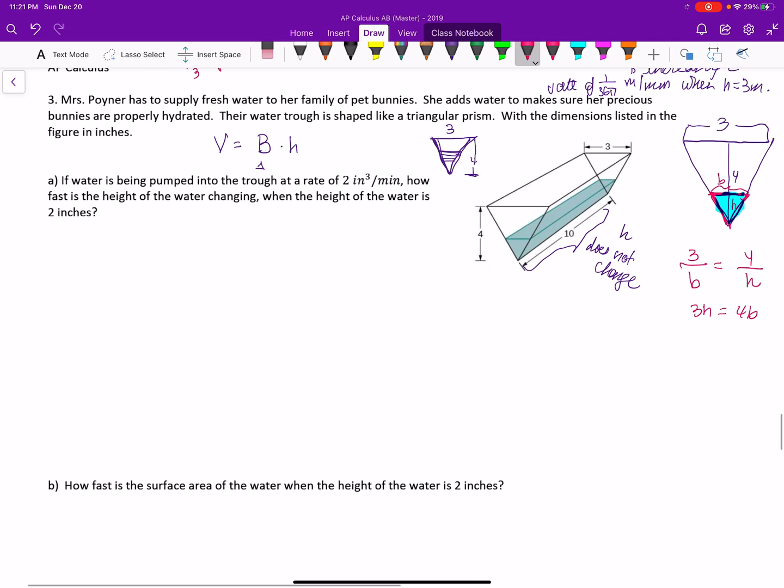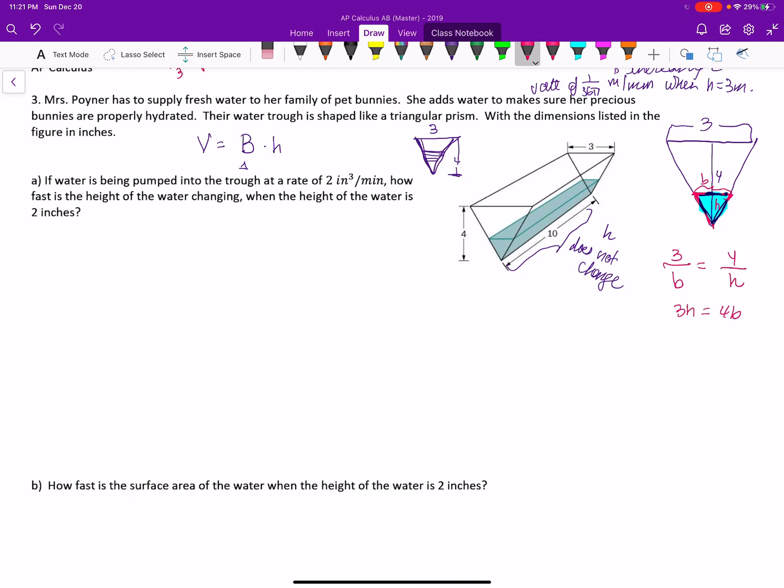If the water is being pumped into the trough at two cubic inches per minute, how fast is the height of the water changing? Essentially, I want to know what dH/dt is. My volume is one half base times height, little base times height. That's just the triangle here. Times, I should not use H. What should I use for this, L maybe? We're going to call that piece length.